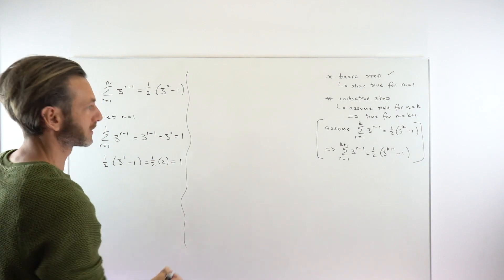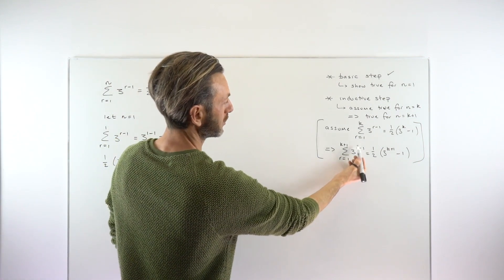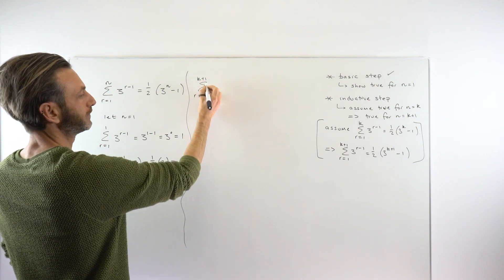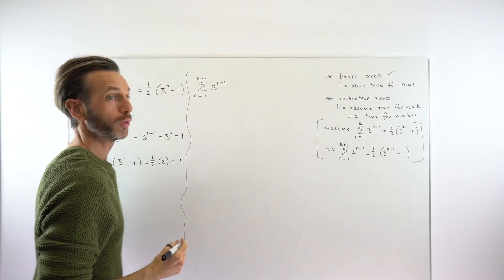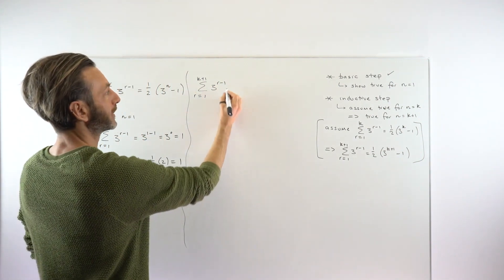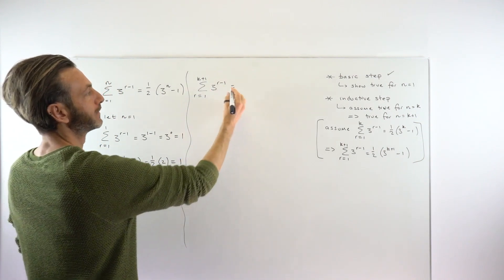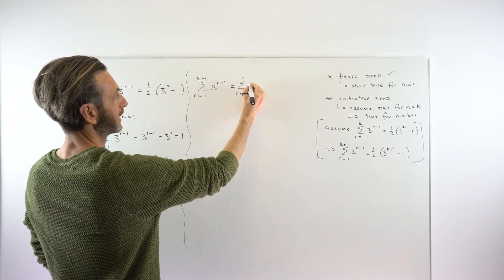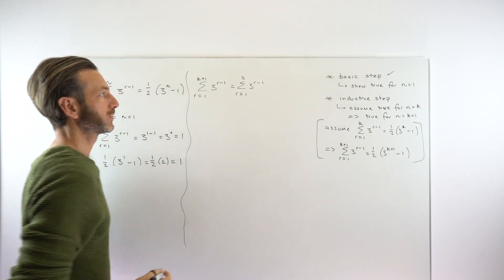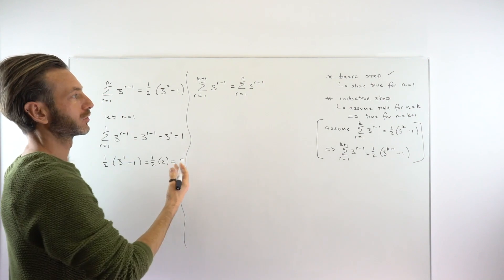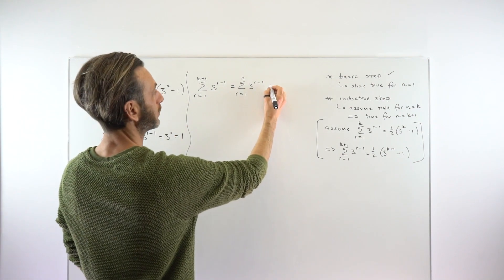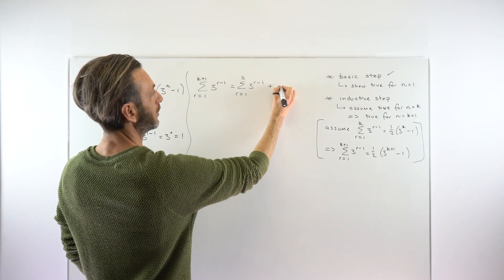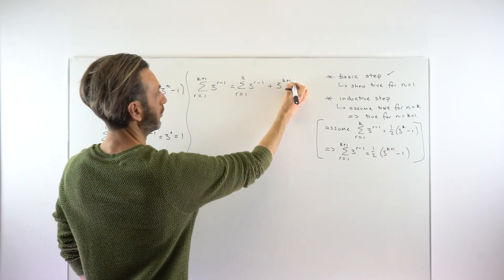We'll work on the inductive step now, starting with the sum from r equals 1 to k plus 1 of 3 to the power of r minus 1. Proof by induction questions often involve series, and a common trick — really the only way — is to split that summation into the sum from r equals 1 to k of 3 to the r minus 1, which is the first k terms, plus that final k plus 1th term, which is 3 to the power of (k plus 1 minus 1).